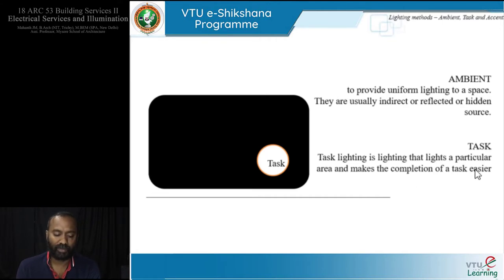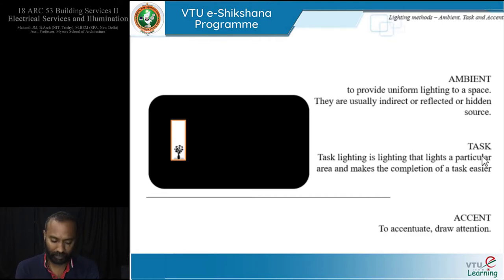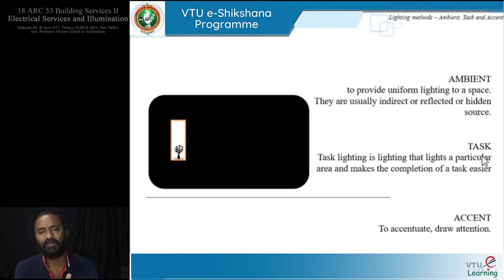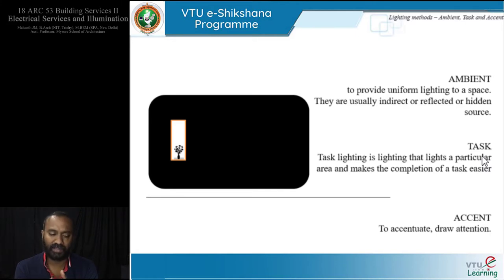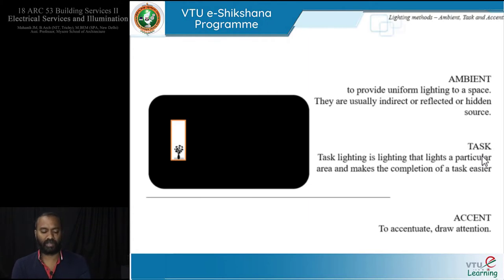Moving on further is accent lighting. Accent lighting is used to accentuate — in other words, to highlight — a particular element or feature that the lighting designer or architectural designer wants to draw attention to. It showcases something that needs to be highlighted according to the designer's intent. That covers ambient, task, and accent lighting.